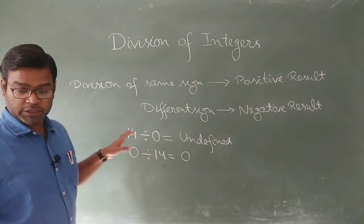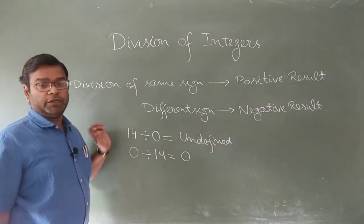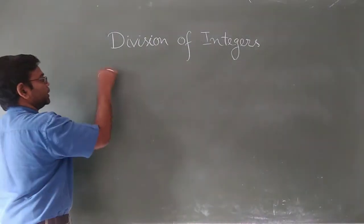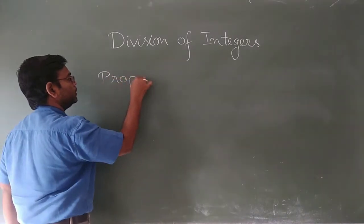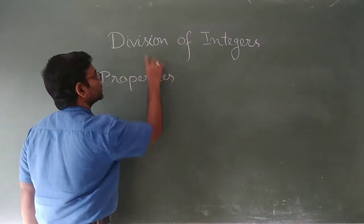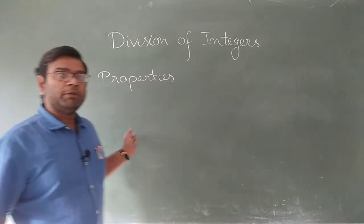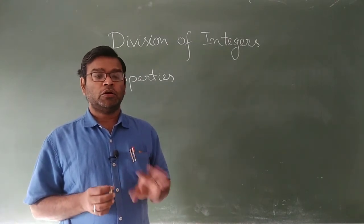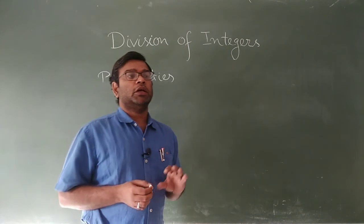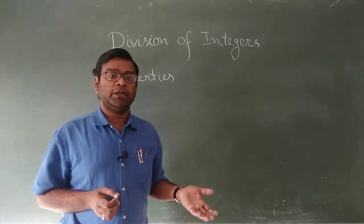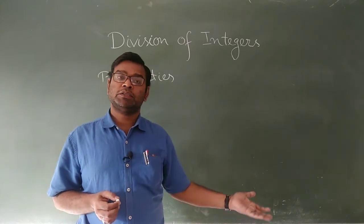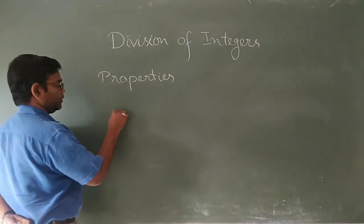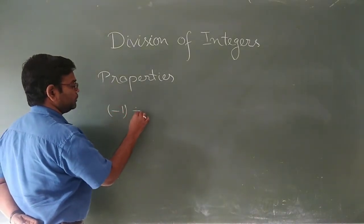Now we are going to discuss properties of division. Remember, whenever an integer is divided by another integer, it is not compulsory that the result is also an integer — this means division does not always give a result in integer form. For example, taking minus one divided by minus two.